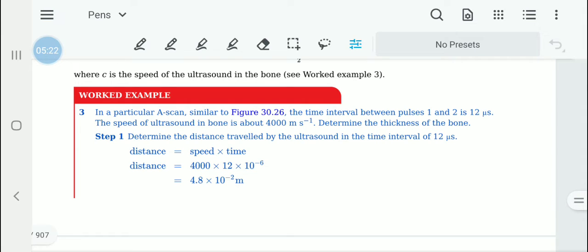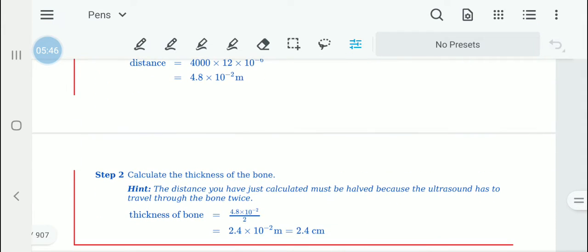We have to figure out the distance traveled by the ultrasound in the time interval of 12 microseconds. The equation is distance equals speed times time, which equals 4000 multiplied by 12 into 10 to the power minus 6 to convert it into seconds. Then we will get 4.8 into 10 to the power minus 2 meters.